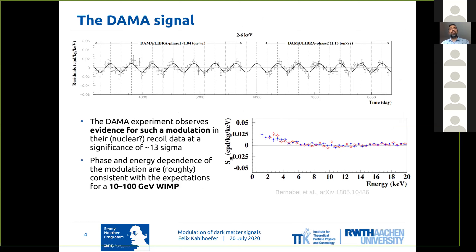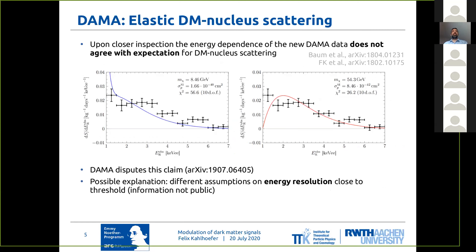The DAMA experiment has been searching for annual modulation and has been observing evidence for such modulation in their nuclear recoil data at very high significance — they quote something like 13 sigma in their most recent publication. What makes this result so intriguing is that both the phase and the energy dependence of this modulation are roughly consistent with what you would expect for a WIMP with mass in the range of 10 to 100 GeV. However, if you look in more detail, it actually doesn't look quite perfect — the energy dependence seen in the modulation does not quite agree with expectations for dark matter-nucleus scattering.